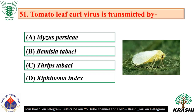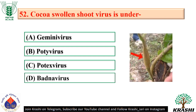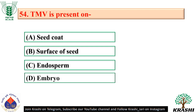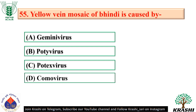Question number 51: Tomato leaf curl virus is transmitted by the whitefly Bemisia tabaci. Question number 52: Cocoa swollen shoot virus is under badna virus. Question number 53: Cell to cell movement of virus takes place through plasmodesmata. Question number 54: Tobacco mosaic virus is present on the surface of seed. Question number 55: Yellow vein mosaic of Bhindi is caused by Gemini virus.